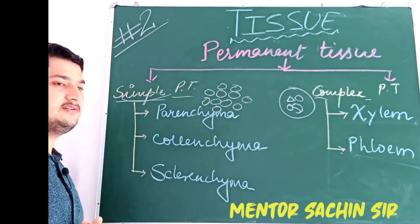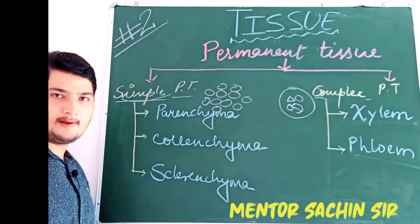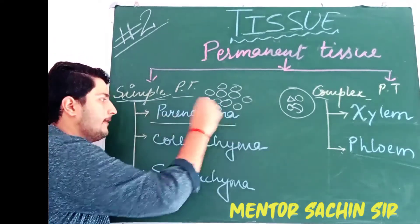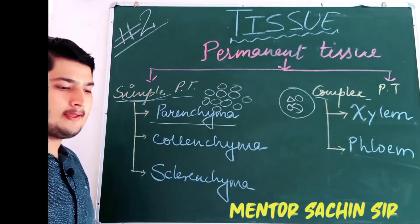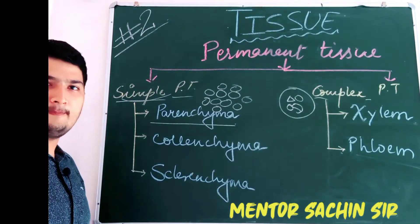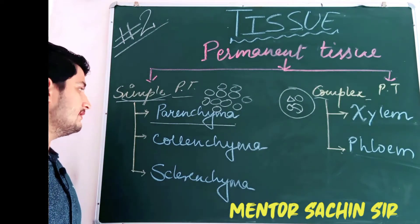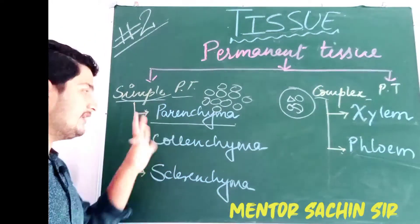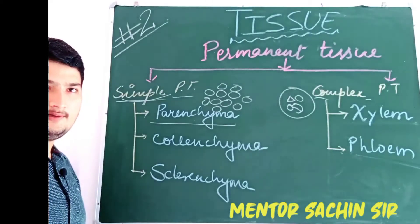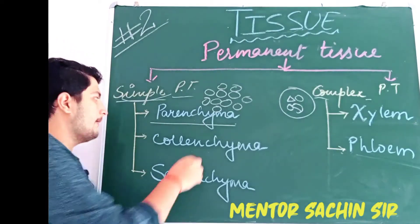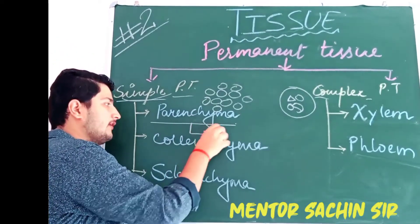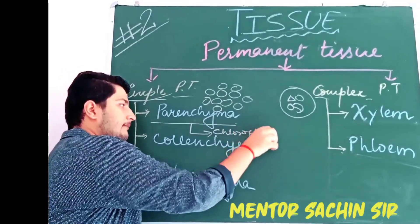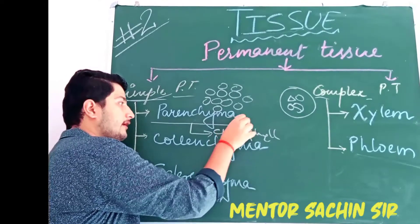What is the function of these tissues? Where are these tissues found in the plant body? We will start from parenchyma. Parenchyma is basically a simple permanent tissue which acts as a storage tissue in the plant. Parenchyma basically stores food in the plant. But in some cases, parenchyma may store chlorophyll, and parenchyma may also store air.